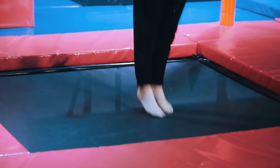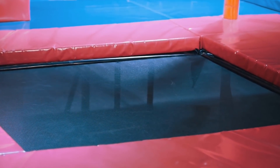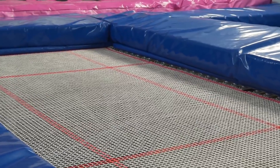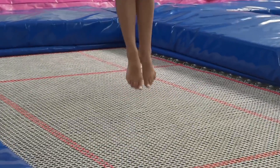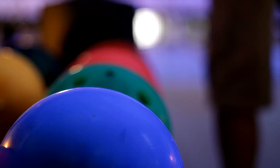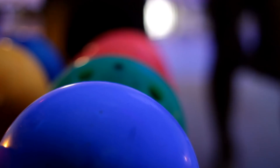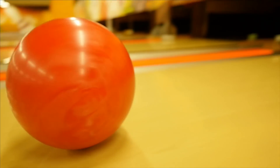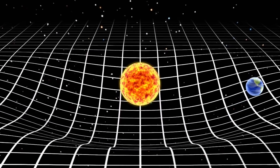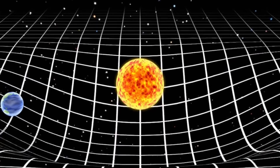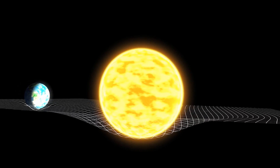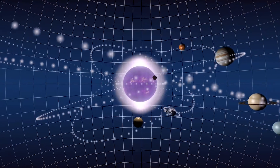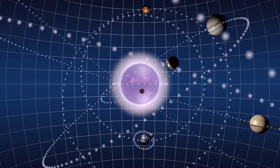If you're having trouble picturing that, imagine yourself on a trampoline. Now imagine that you put a bowling ball onto it — it would sink to the middle. Now with the bowling ball in the middle, what would happen if you put a marble on the edge of the trampoline? It would go into the valley created by the bowling ball. Due to the sun having the biggest valley, it is the center of our system and we rotate around it. But all the other planets in our solar system have their own mini-valleys, and that's why the moons of various planets rotate around them.